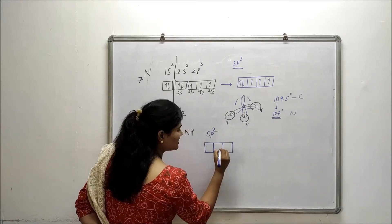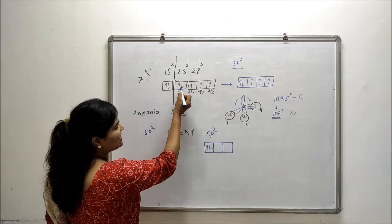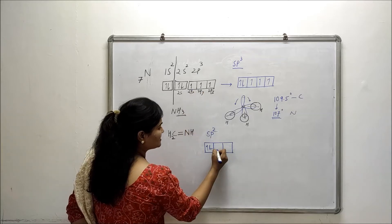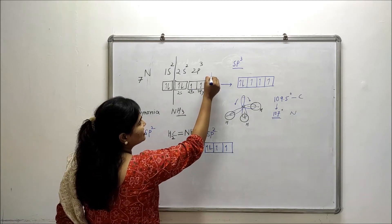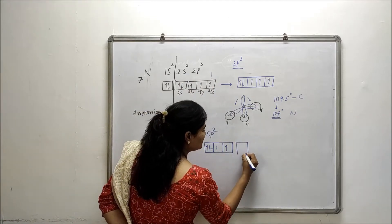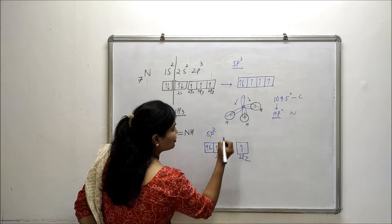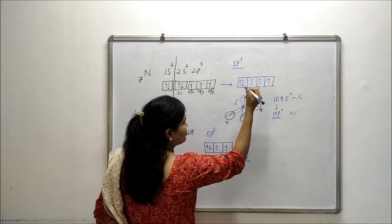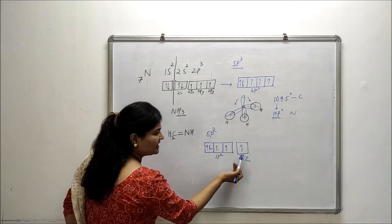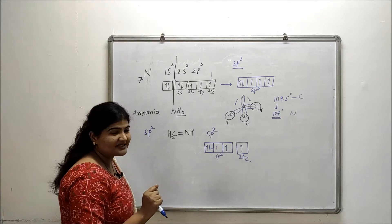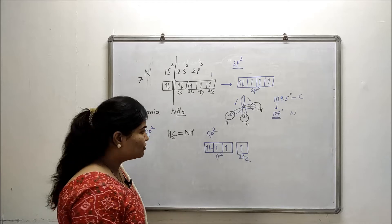In sp2 hybridization, we get 3 equal energy hybrid orbitals using 1 s orbital (already having 2 electrons) and 2 of the 2p orbitals. This gives the sp2 hybrid orbitals. The remaining unhybridized 2pz orbital is left out. So sp2 gives 3 hybrid orbitals plus one unhybridized 2pz orbital.